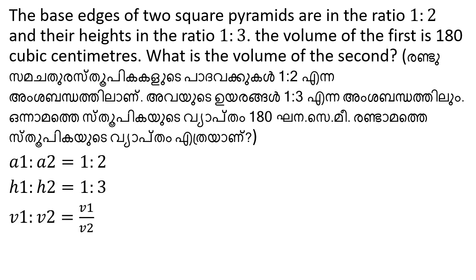The volume ratio V1 by V2 equals (1/3 · a1² · h1) divided by (1/3 · a2² · h2). The first pyramid has base edge a1 and height h1, the second has a2 and h2. The value of a1 is 1, h1 is 1, a2 is 2, and h2 is 3.